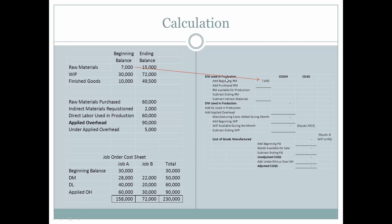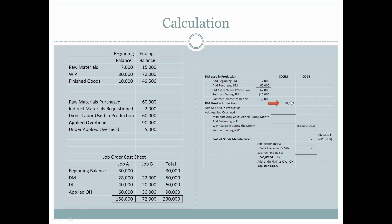First, in calculating the direct materials used in production, we add beginning raw materials, then add raw materials purchased during the period to get raw materials available for production. To find what was used in production, we subtract ending raw materials. However, we also subtract the indirect materials that were requisitioned, since we are isolating direct materials used in production. Those indirect materials were taken out of raw materials and must be removed from the calculation. This gives us a result of $50,000.